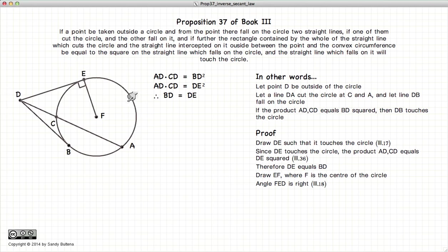Carrying on, we're going to draw a line from E to F where F is the center of the circle. According to Proposition 18 of Book 3, if DE touches the circle, then the angle DEF will be a right angle.